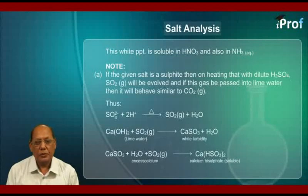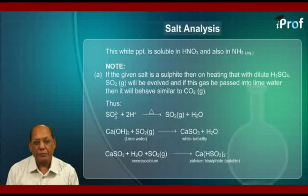Thus sulfite ions plus 2H⁺ ions on heating will give SO₂ gas plus H₂O. Then Ca(OH)₂, the lime water, will react with SO₂ gas to give CaSO₃ calcium sulfite that too being insoluble will form white turbidity plus H₂O.